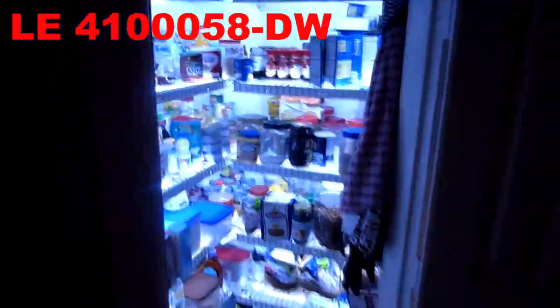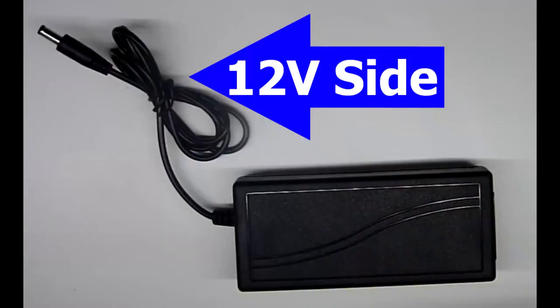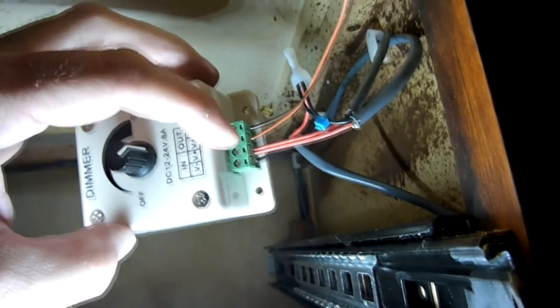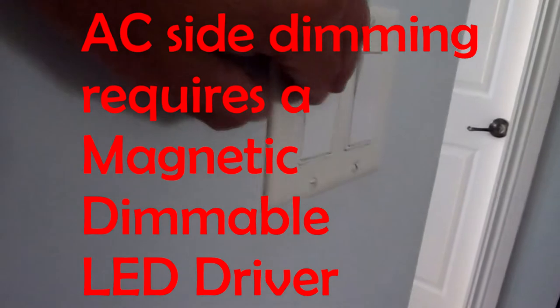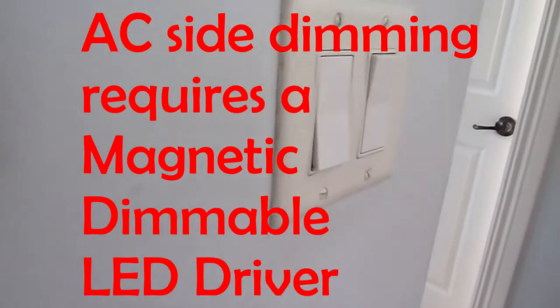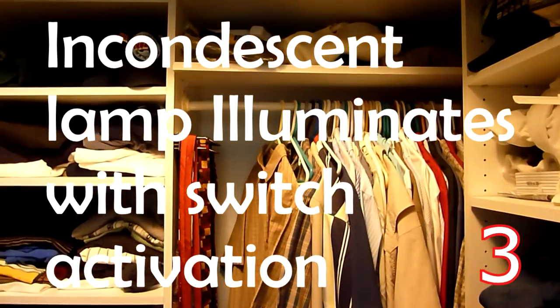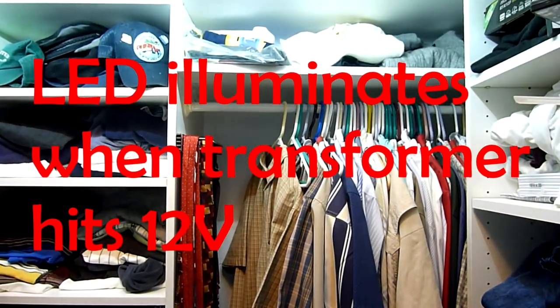All of the activation devices I just showed you operate on the 12-volt side of the DC transformer. Please be aware if you put a switch on the AC side of the transformer: if you want to dim, you need a magnetic dimmable driver. Running a switch on the AC side of the transformer can cause a 2-3 second delay when turning on the lights as you enter the room.